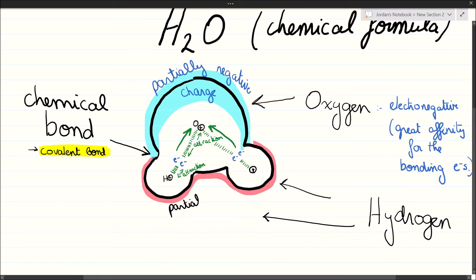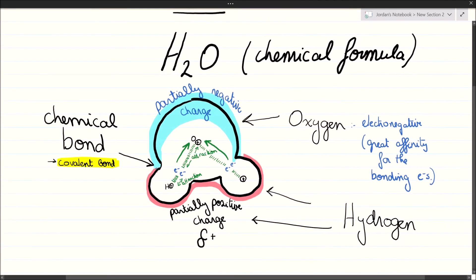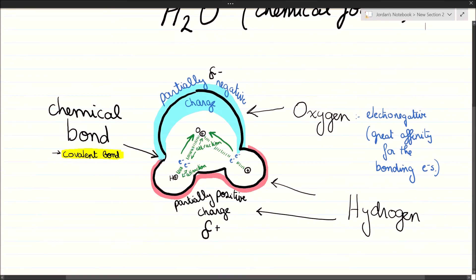While the hydrogens, having more of the opposite property, attracting much less those bonding electrons, they acquire a partially positive charge. The oxygen a partially negative charge and the hydrogens a partially positive charge. We use the symbol delta, the fourth letter of the Greek alphabet, so delta negative here and delta positive there, to indicate the different partial charges that the two sides of the water molecule have.